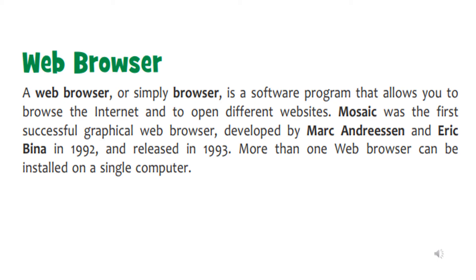Children, when talking about search engines, it is very important to learn about web browsers. Most of the time children are confused between web browsers and search engines. Web browsers are software programs which we need to browse and explore websites. If we have a web browser, then we can explore the websites in it. Mosaic was the first successful graphical web browser, developed by Marc Andreessen and Eric Bina in 1992 and released in 1993. You should learn both the names and the year. We can install multiple web browsers on a single computer — like you may have both Google Chrome and Microsoft Edge on your computer.